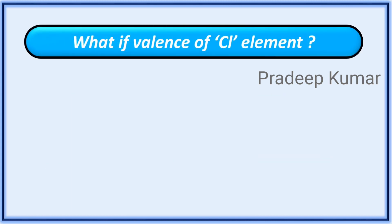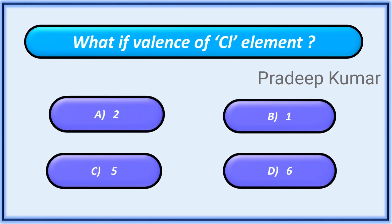What is the valence of chlorine element? Options: A. 2, B. 1, C. 5, D. 6.